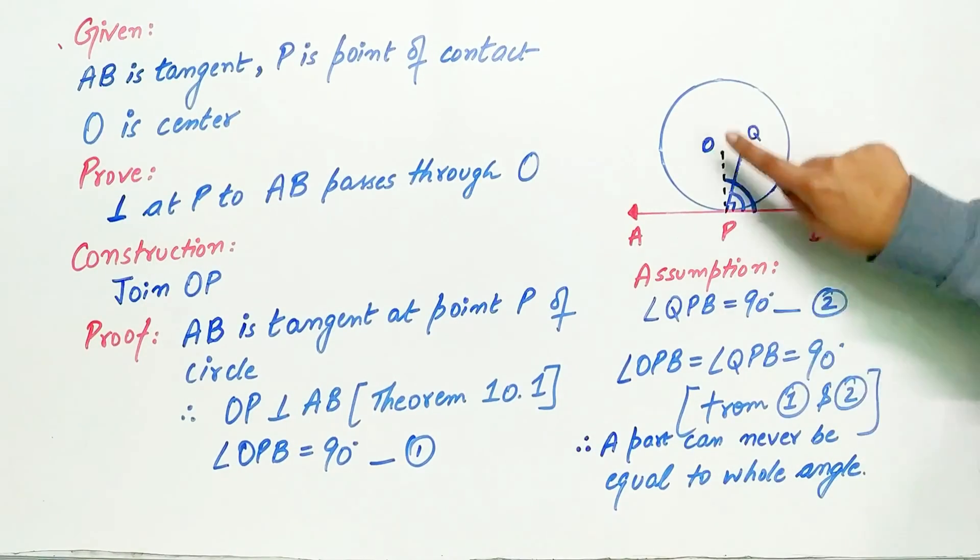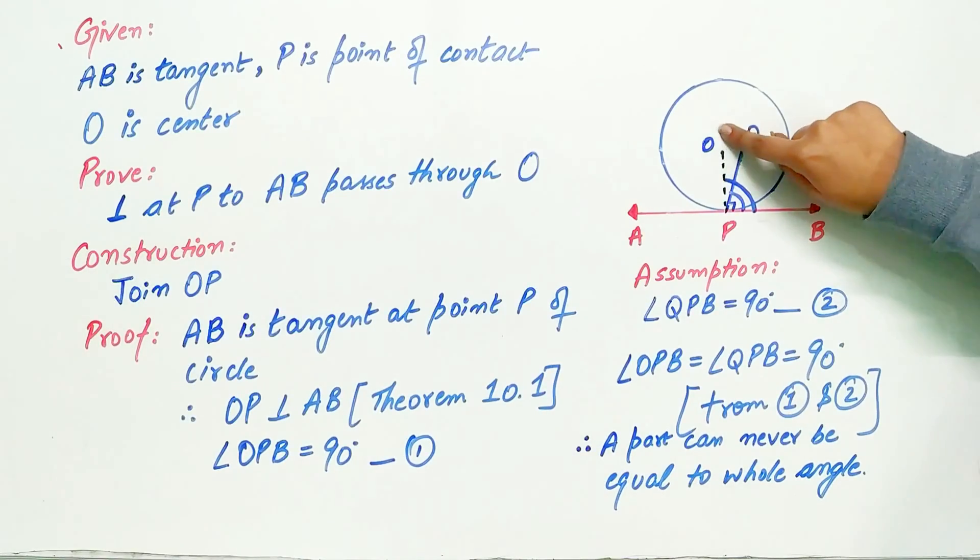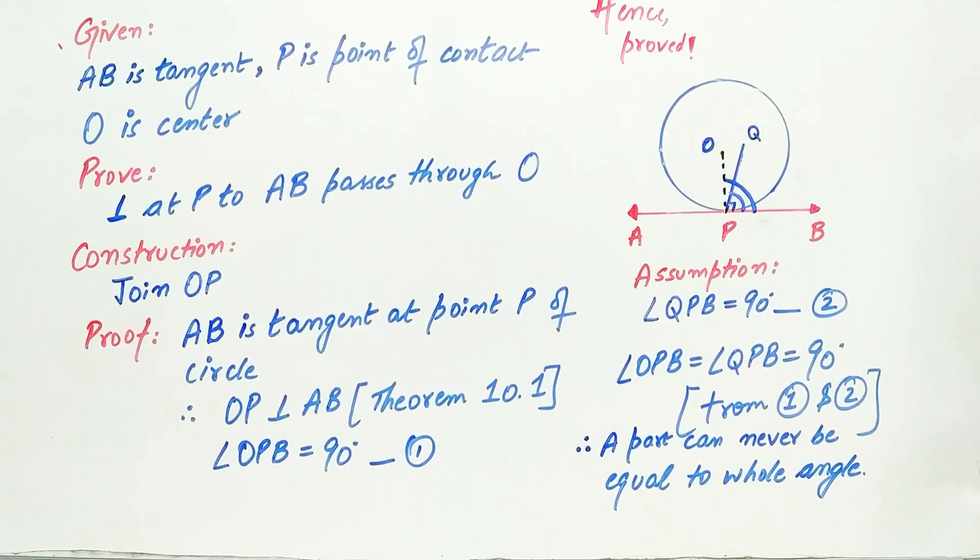Hence any perpendicular to the tangent of a circle will pass through the center of circle, that is O. Hence proved.